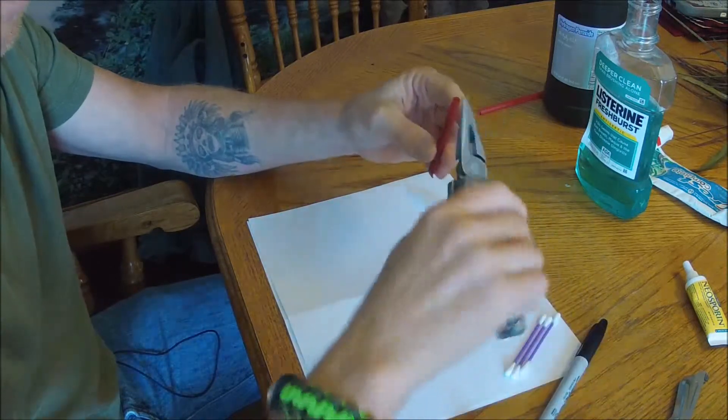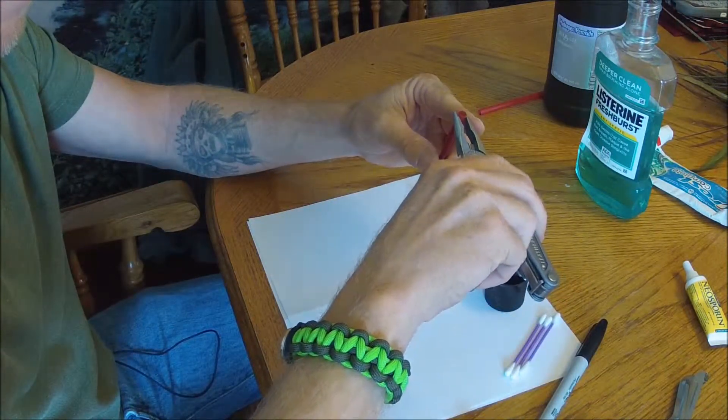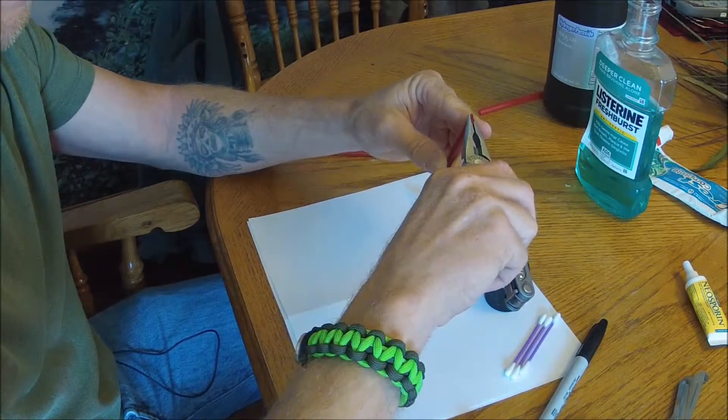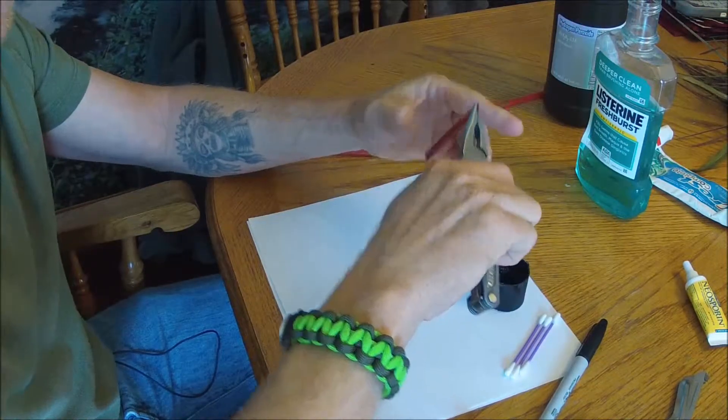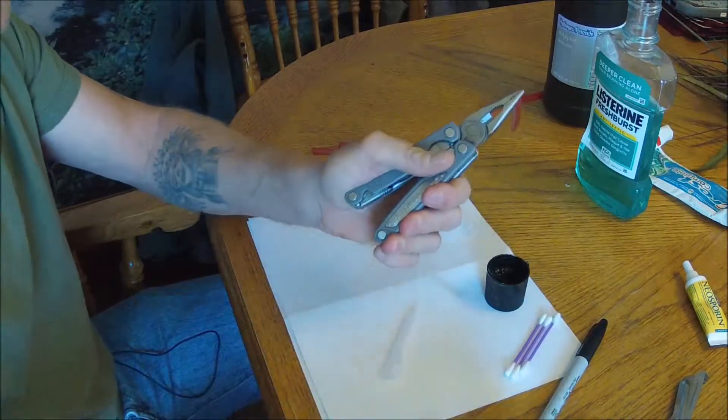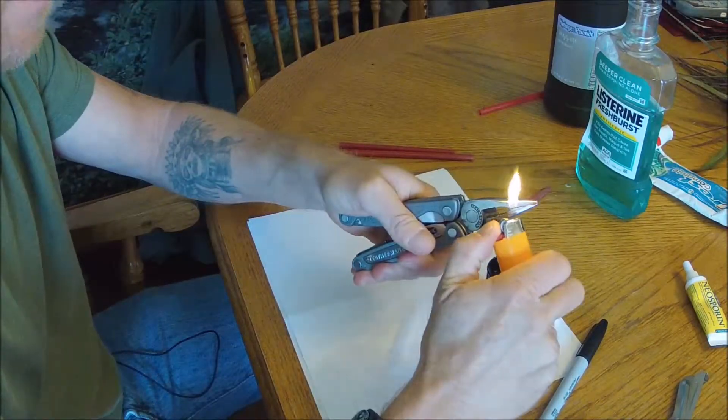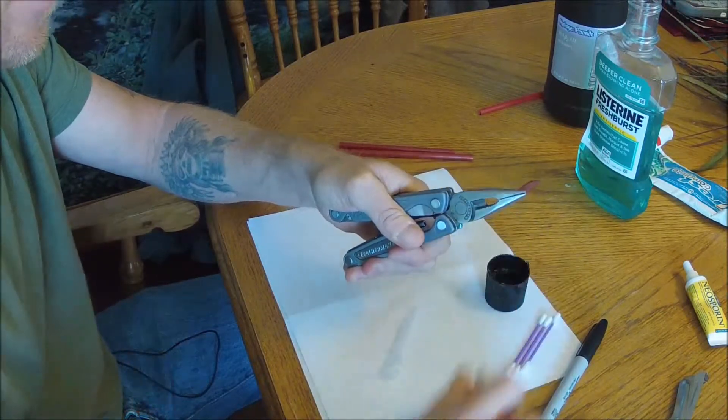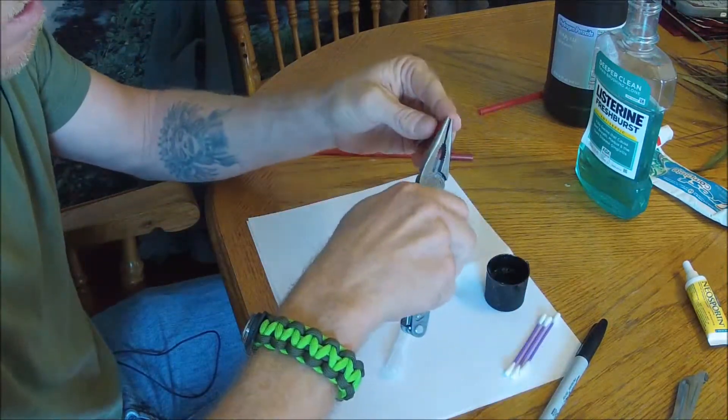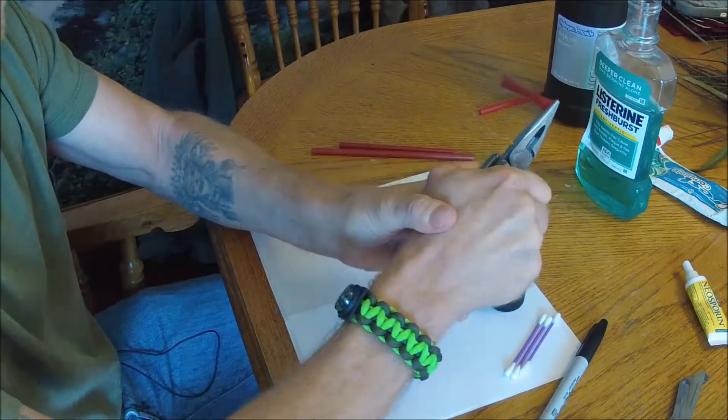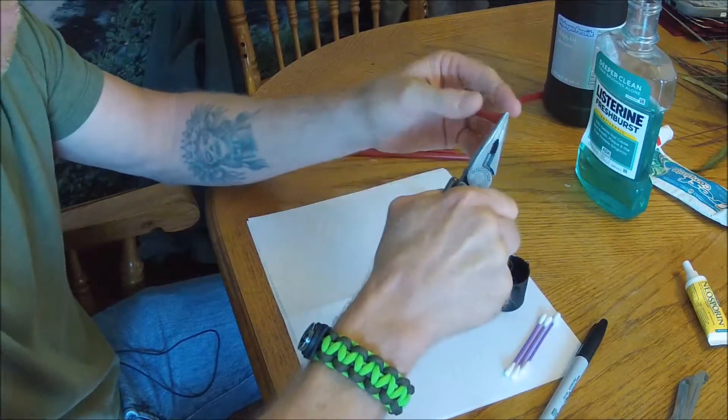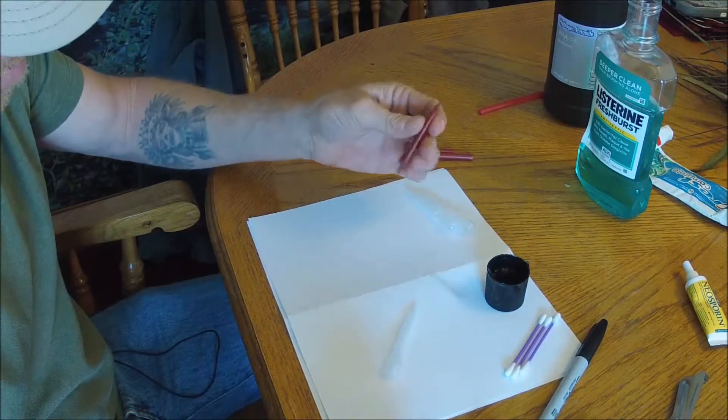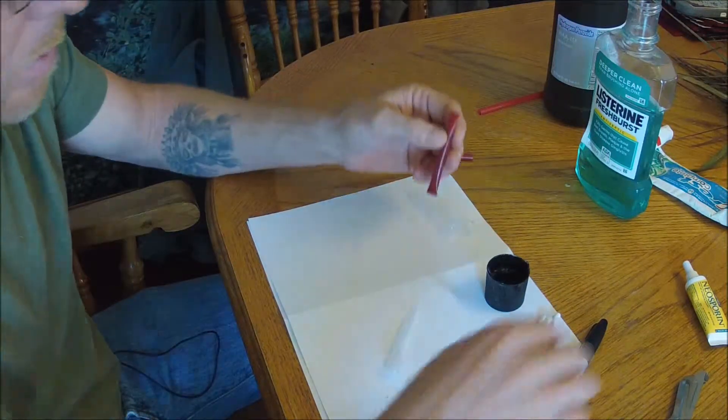Now you take your pliers, your Leatherman, whatever, clamp it off about an eighth of an inch again before the end there. Take it, hold it real tight because you don't want any of that spilling out. Go ahead and run your flame over your edge and clamp it, seal it real good. Okay what you have there is a good watertight seal.